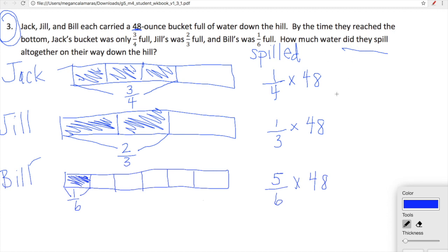We need to figure out how much water did they spill all together. We'll do one times 48 for Jack over four, which equals 48 over four, which equals 48 divided by four, equals 12. And that's 12 ounces. Let's check out what's going on with Jill. We have one times 48 on the top over three, which equals 48 divided by three, which is equal to 16 ounces.